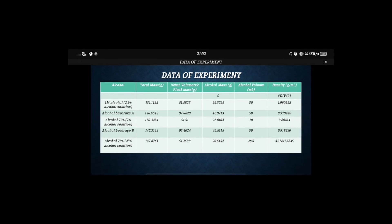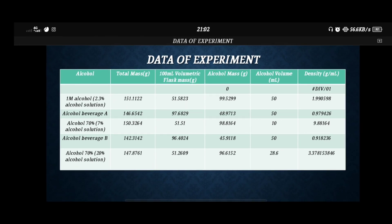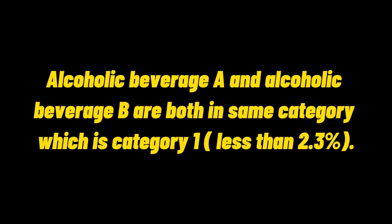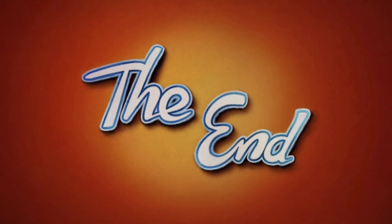This is the data we got from the experiment. The density of the 20% alcohol solution is 3.37815. The density of alcoholic beverage A is 0.979426 and the density of alcoholic beverage B is 0.918236. We can conclude that alcoholic beverage A and alcoholic beverage B are both in the same category, which is category 1. That's all for our experiment today. Thank you for watching and good luck for your final exam. Bye-bye!